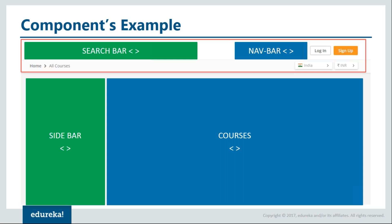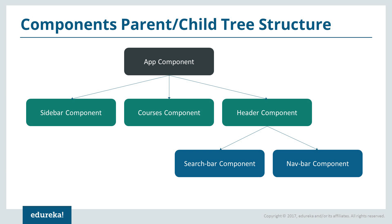One interesting thing about components is that you can nest other components inside a component. For example, the search bar and navbar components are nested inside the header component, so the header component is the parent of the search bar component. All these components — header, sidebar, and courses — are child components of app component, which is the root component. They are structured in a parent-child tree, so whenever the parent app component renders, it recursively renders its children components as well. This is how you get the whole application rendered in your browser.